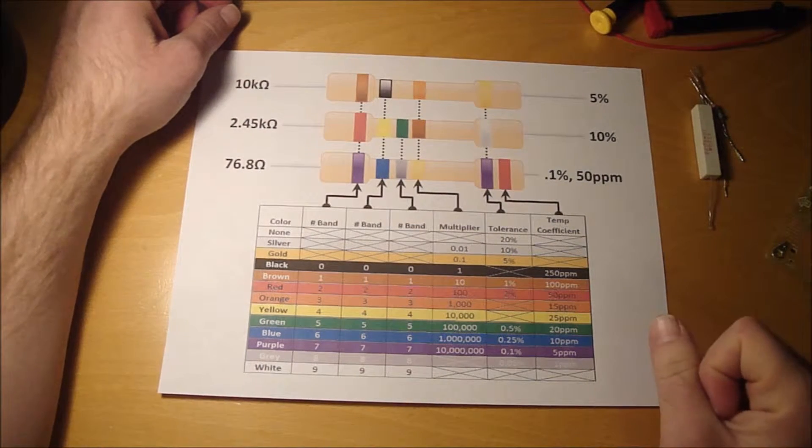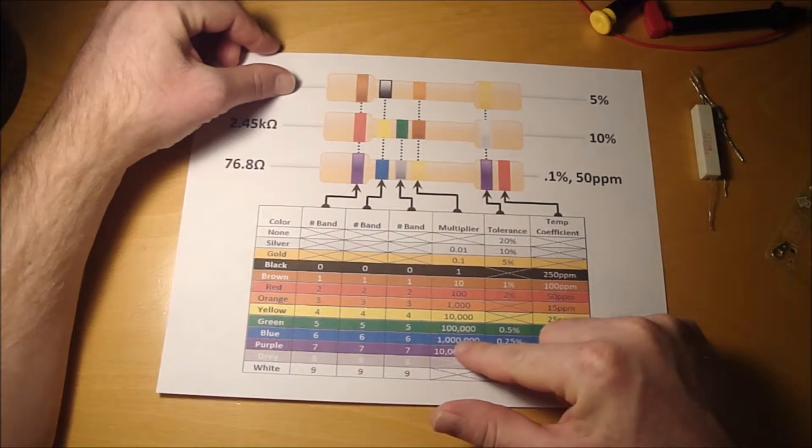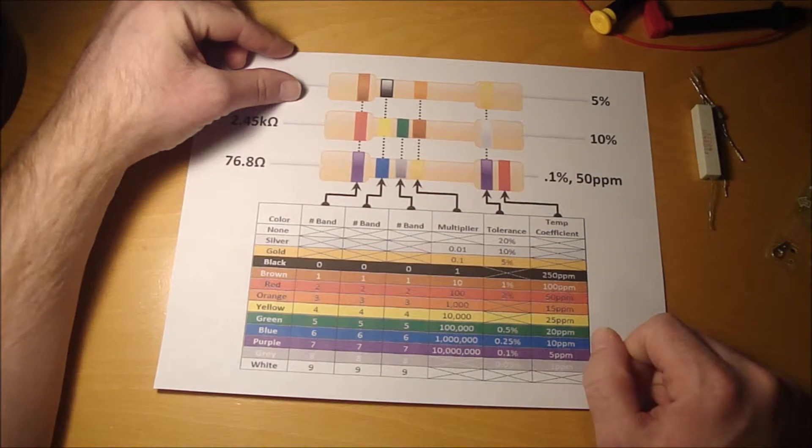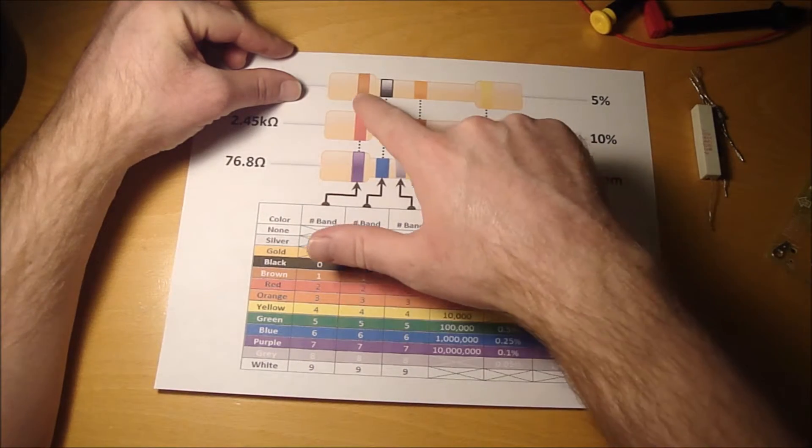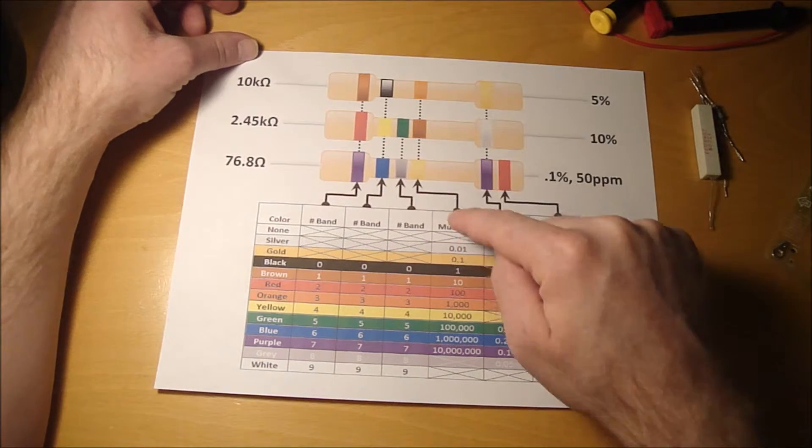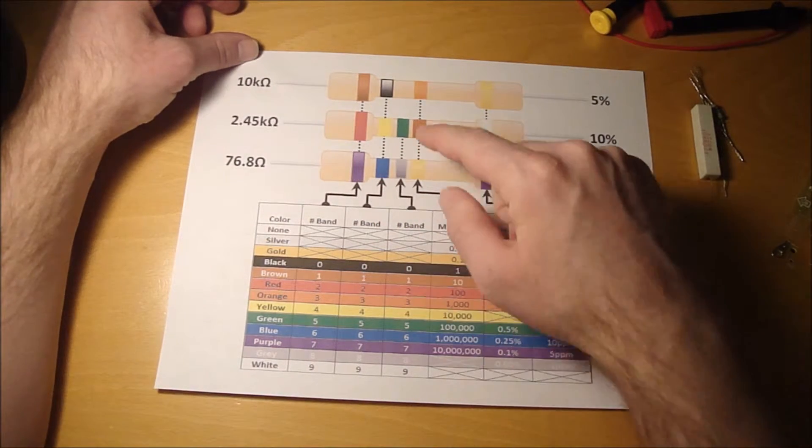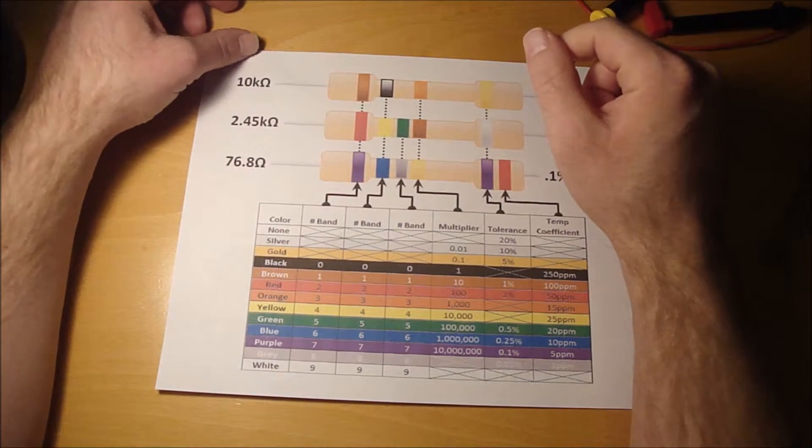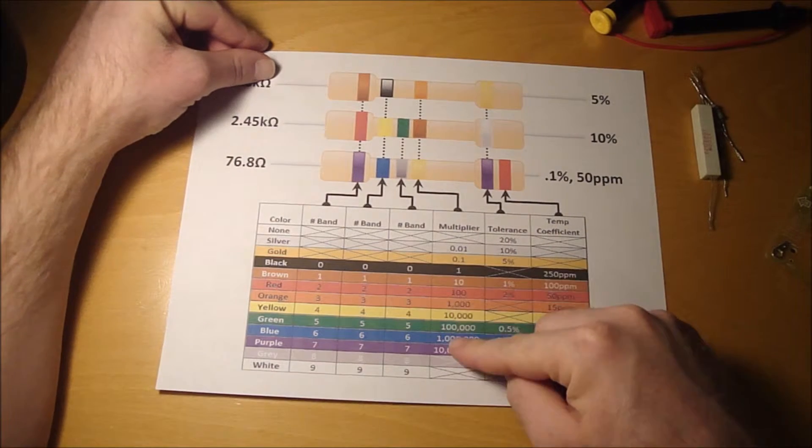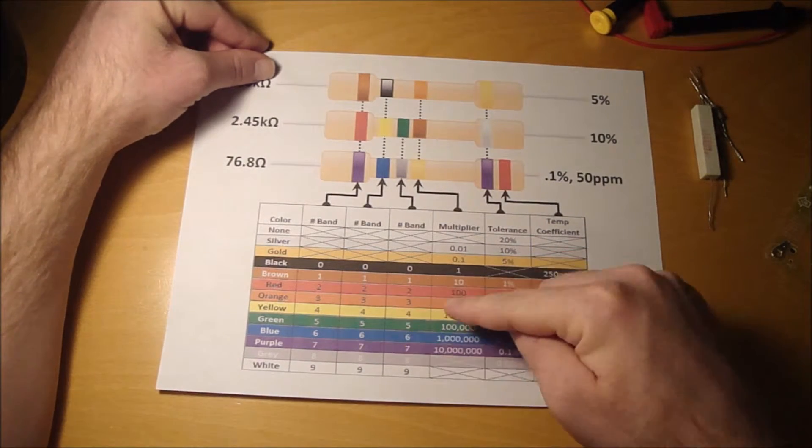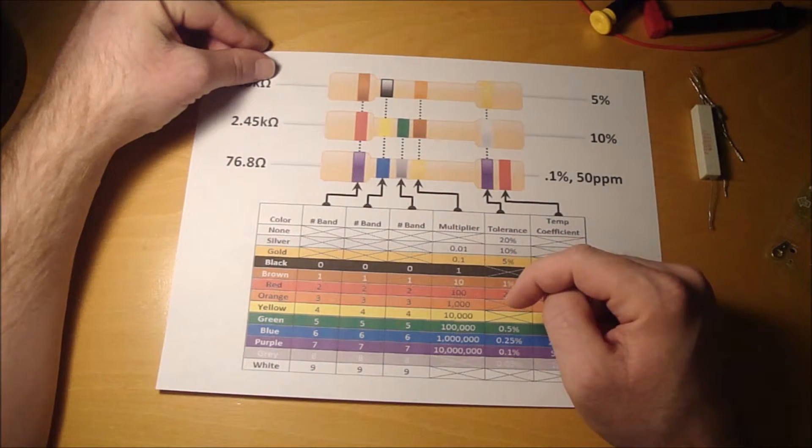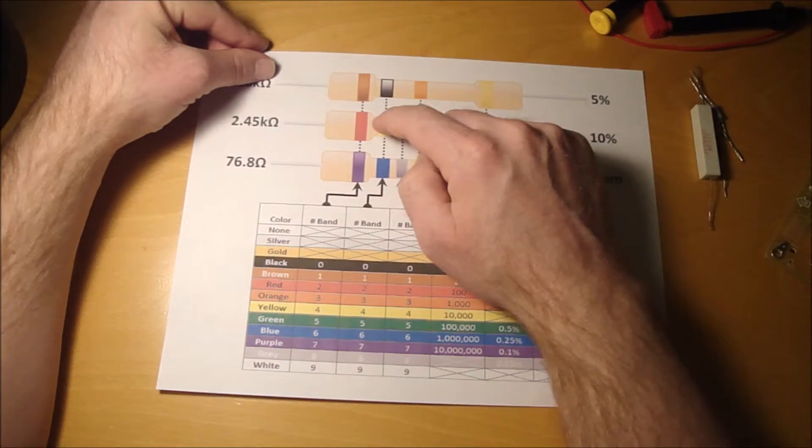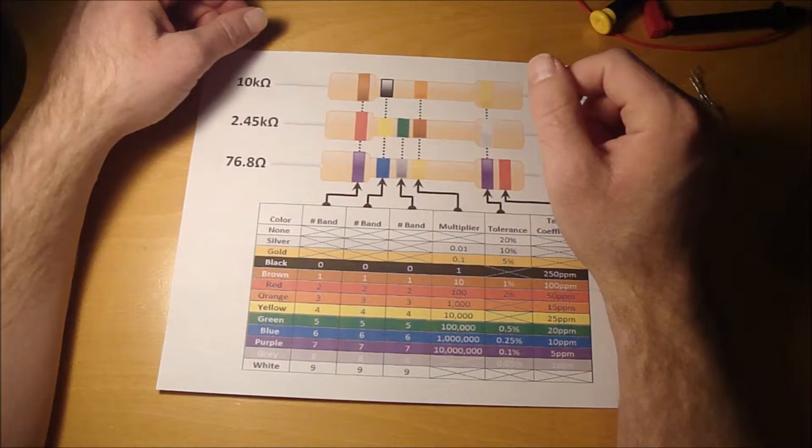Or a resistor that just shows the value. Another way of looking at the multiplier is the same number that shows up in the number band is how many zeros you're going to have after the number. Let's say you have one zero and then orange, and the number band is three. So you would have three zeros after that. So you have brown black, which is one zero, and then three zeros. So it's 10,000, so 10K. I think that's a little easier to remember than trying to remember the numbers. Just remember the number band, and that tells you how many zeros to add on after the numbers. So two, four, five, and then brown is one zero. So 2,450 ohms.